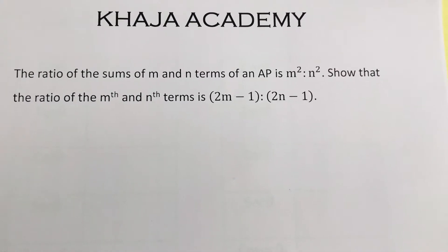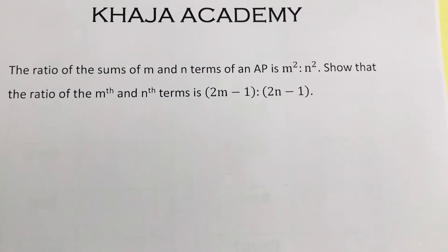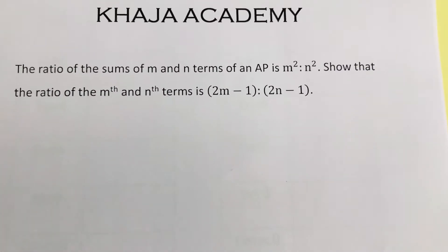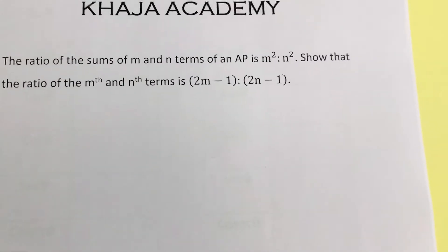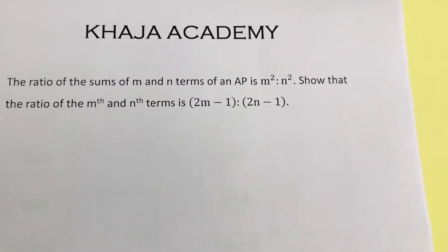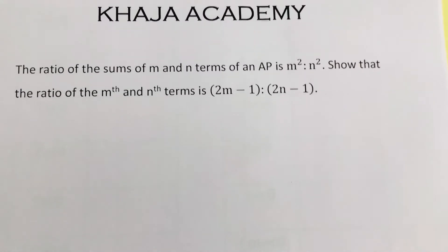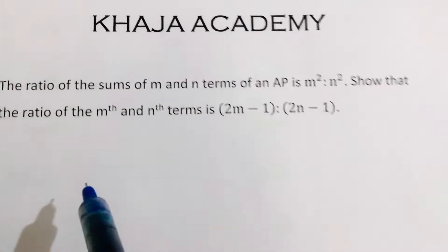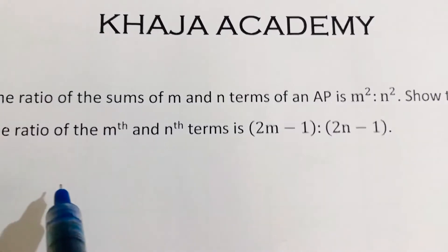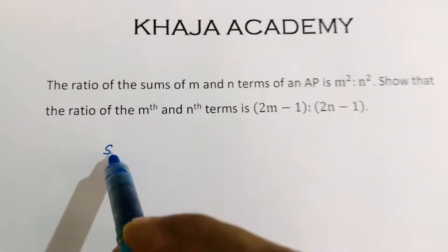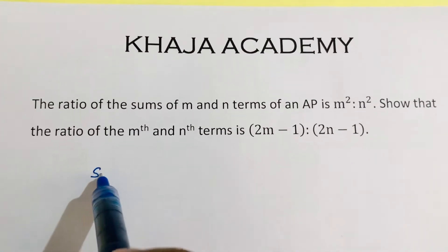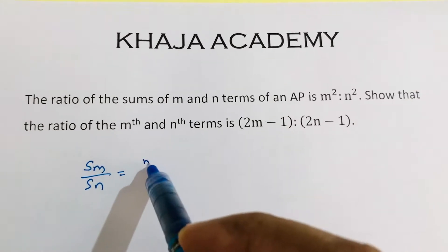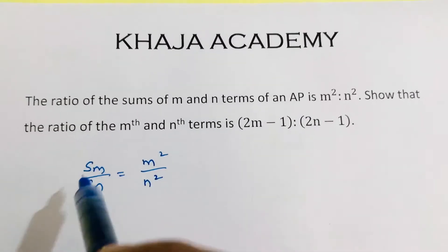The ratio of sum of m and n terms of an AP is m square to n square. So the ratio of m-th and n-th terms is 2m minus 1 to 2n minus 1. They gave sum of m terms to sum of n terms is m square to n square.